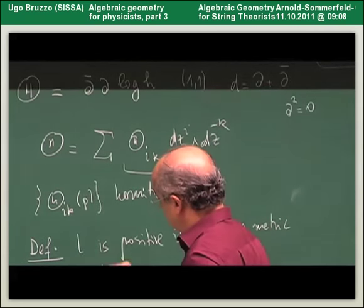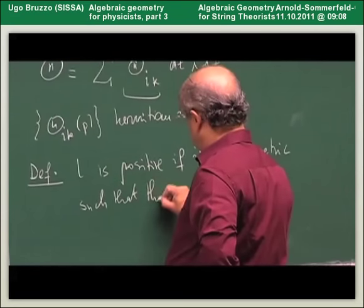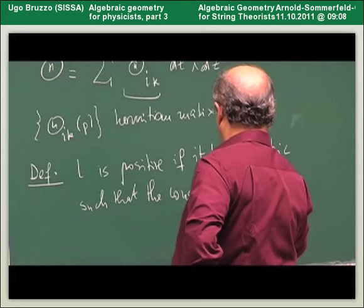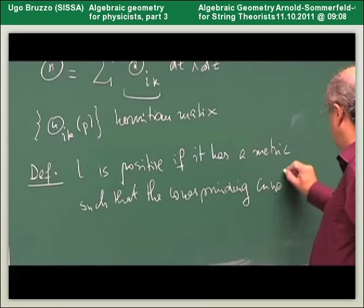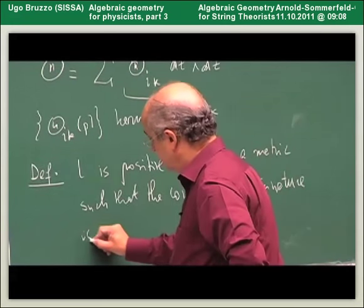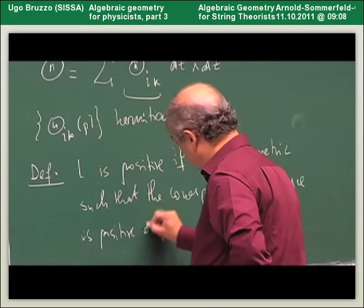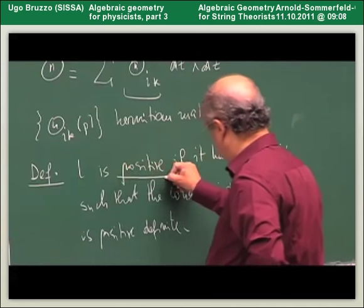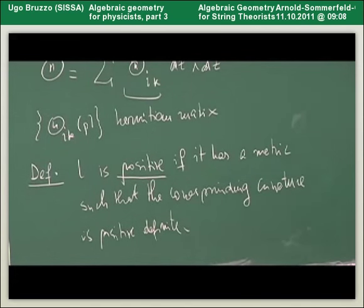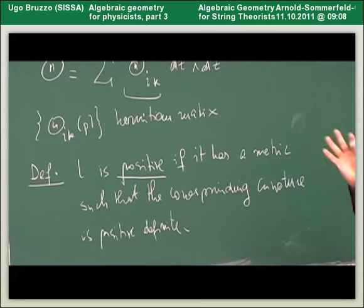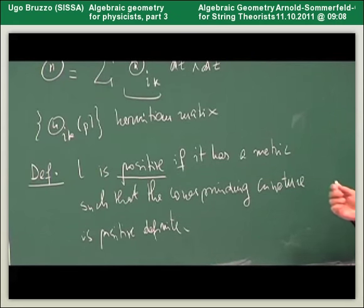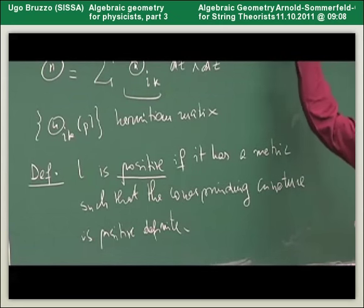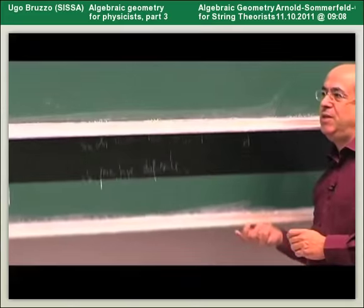We say that L is positive if it has a metric such that the corresponding curvature is positive definite. The fact that this matrix is positive definite is independent of the choice of local coordinates, so this property is just an attribute of the line bundle. A line bundle is positive if it admits such a metric. The Kodaira Embedding Theorem — which I don't have time to prove — says that every positive line bundle is ample.